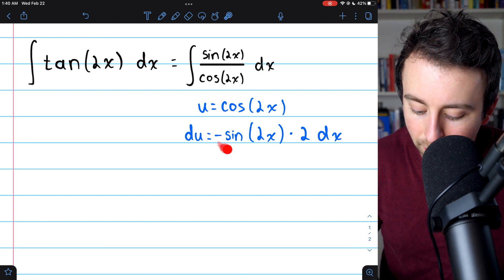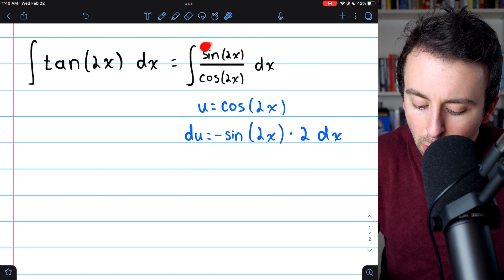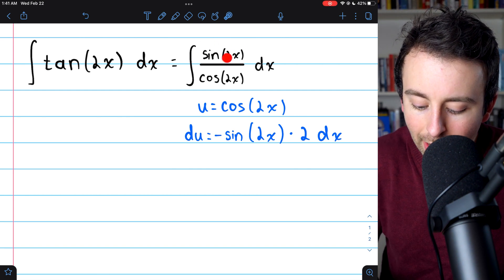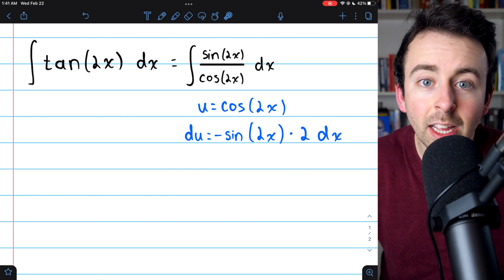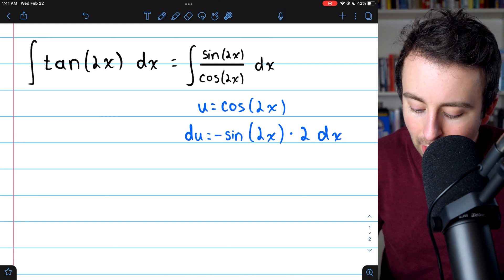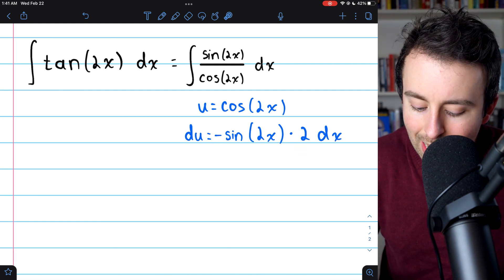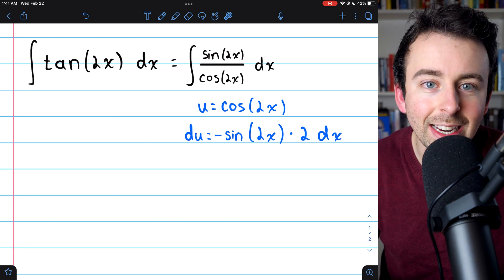Now, negative sine of 2x times 2 dx is close to what we have left in the integrand, sine of 2x dx. We just need to get rid of the negative and we need to get rid of the factor of 2, because we don't see either of those things in our integrand.